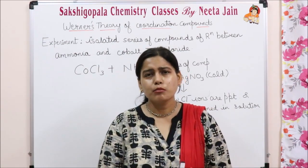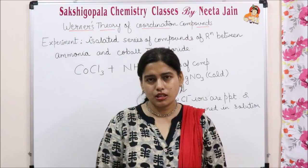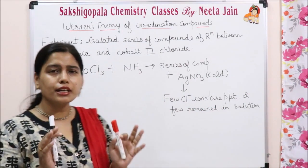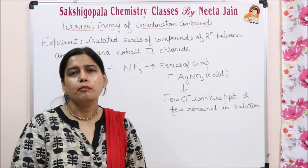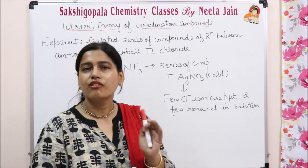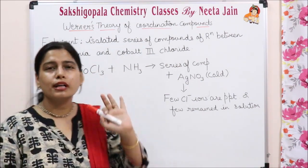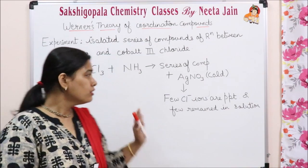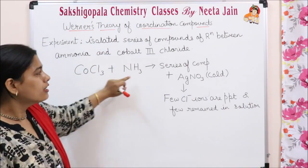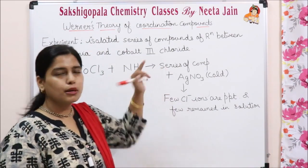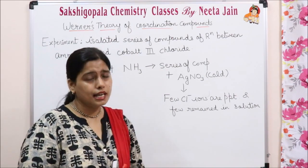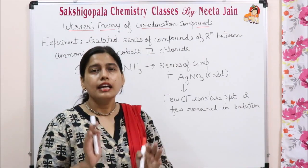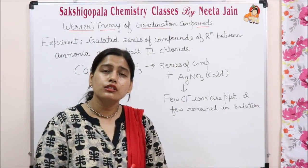Let us understand point-wise what were his experiments and work. Point number one: he tried to isolate different series of compounds by the reaction of cobalt(III) chloride with ammonia. He took cobalt(III) chloride with ammonia, and a series of complex compounds were formed. It was noticed that when silver nitrate (AgNO₃) is added in cold conditions to the reaction mixture, some of the chloride ions got precipitated out.